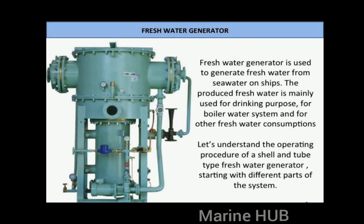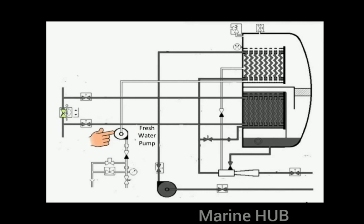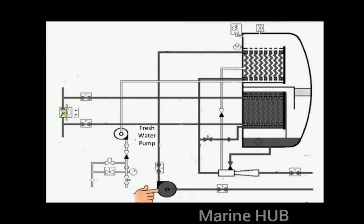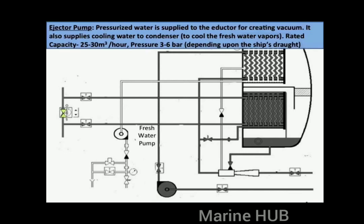The first component of the fresh water generator is the fresh water pump, which is used to supply the generated fresh water to the ship's fresh water tanks by taking suction from the generator. The normal rated capacity varies from 3 to 5 cubic meters per hour, depending mainly on the supply head. The next component is the ejector pump, which supplies pressurized water to the inductor for creating vacuum and also supplies cooling water to the condenser. Its rated capacity varies from 25 to 30 cubic meters per hour at a pressure of 3 to 6 bar.